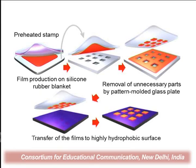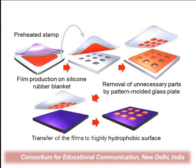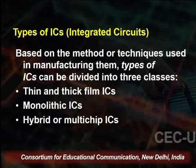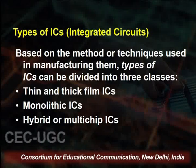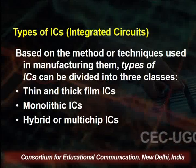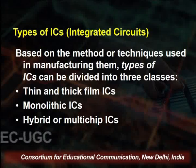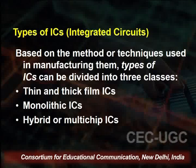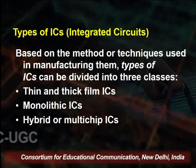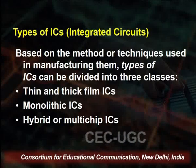From the diagram we can see the film production on a silicon rubber blanket — removal of the unnecessary part by pattern model glass plate, then transfer of the films to a highly hydrophobic surface to get the desired film. Heating and flaming heating is also an important part of the development of the integrated circuit. On the basis of techniques used in manufacturing, the types of IC can be divided into three classes: number one — thin and thick film ICs; number two — monolithic ICs; number three — hybrid or multi-chip ICs.